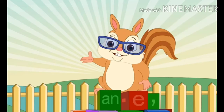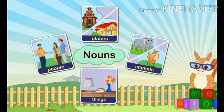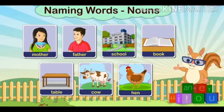What is a noun? First of all, we need to know what noun means. Everything around us has a name — everything in our past — such as people, places, animals, things, etc. All naming words are called nouns. Mother, father, school, book, table, cow, hen — are all naming words or nouns.